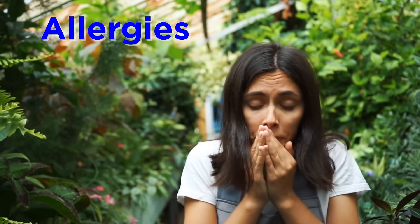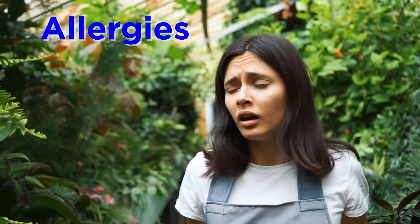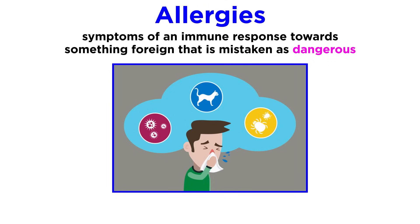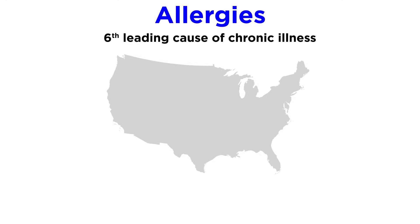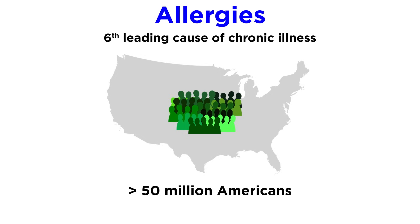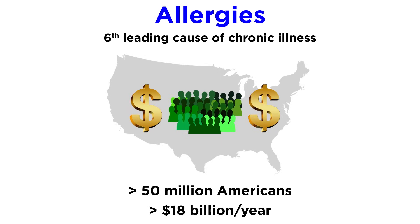Many of us are familiar with allergies. To put it generally, allergies are the symptoms of an immune response that occurs when your body encounters something foreign to itself that it mistakes for something dangerous. This could include things like foods, drugs, insect bites, pet dander, and pollen. Allergies are exceedingly common, and as the sixth leading cause of chronic illness in the US, they affect over 50 million Americans, costing over 18 billion dollars annually.